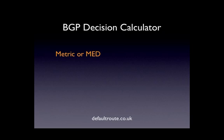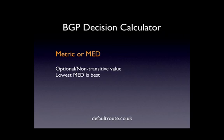The last one is metric, or MED — Multi Exit Discriminator. It's an optional, non-transitive value. The MED you set on your BGP updates is given to your neighbouring AS and goes no further — you're basically telling your neighbouring router in the next AS your preference for inbound traffic. The lowest MED is the best, so you'd set the lowest number on your preferred link. MED is only used where the first AS in the path is the same — it's used between two neighbouring ASs with multiple links.